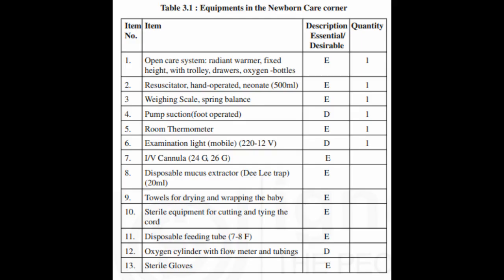3.2.3 Level III: Newborn care services are provided at the district hospitals, which have been identified as Maternal and Child Health Level III Centers. In addition to the Newborn Care Corner Unit (NCCU) set up in the Labor Room and Operation Theater, a Special Newborn Care Unit (SNCU) — a neonatal unit in the vicinity of the Labor Room for providing special care, i.e. all care except assisted ventilation and major surgery — is set up. Any facility with more than 3,000 deliveries per year should have a SNCU. The National Neonatology Forum (NNF) has recommended the following standards for organizing newborn care services at all three levels.